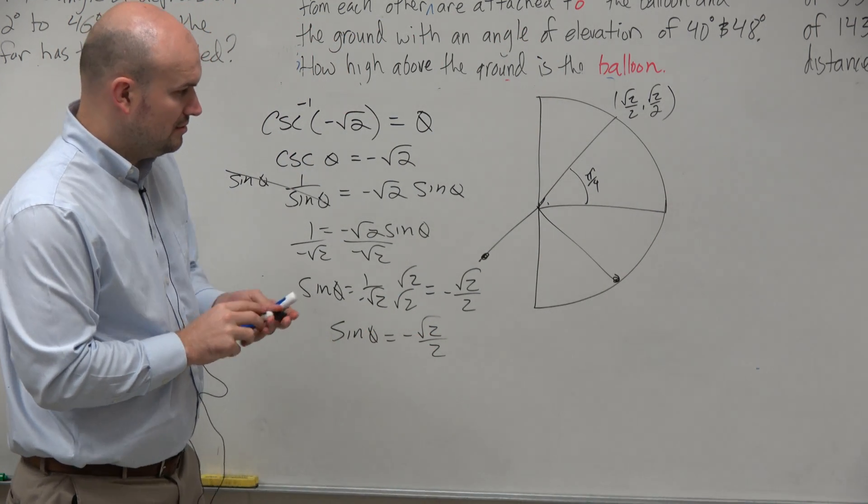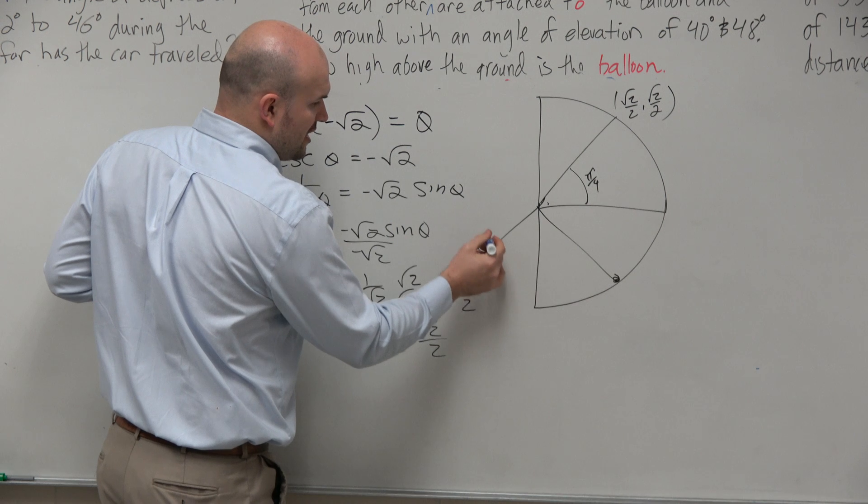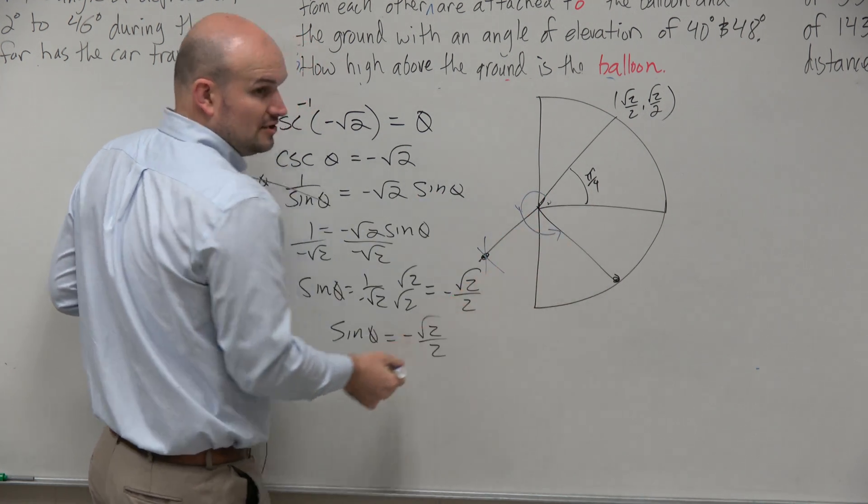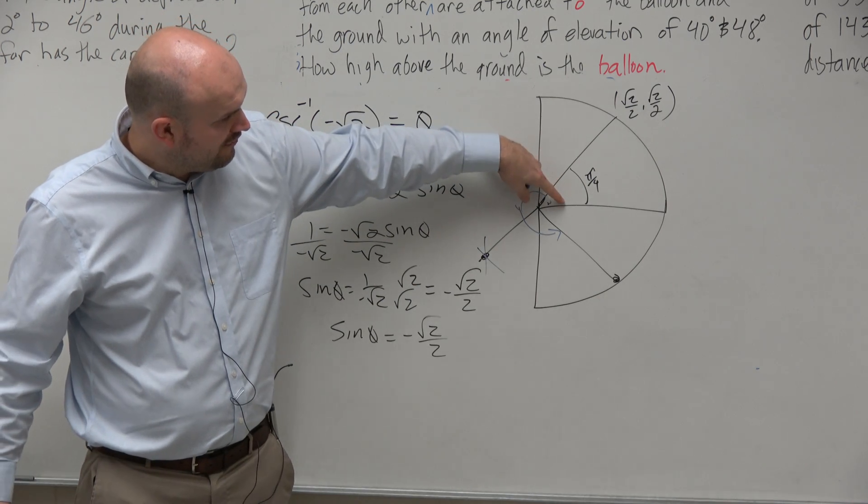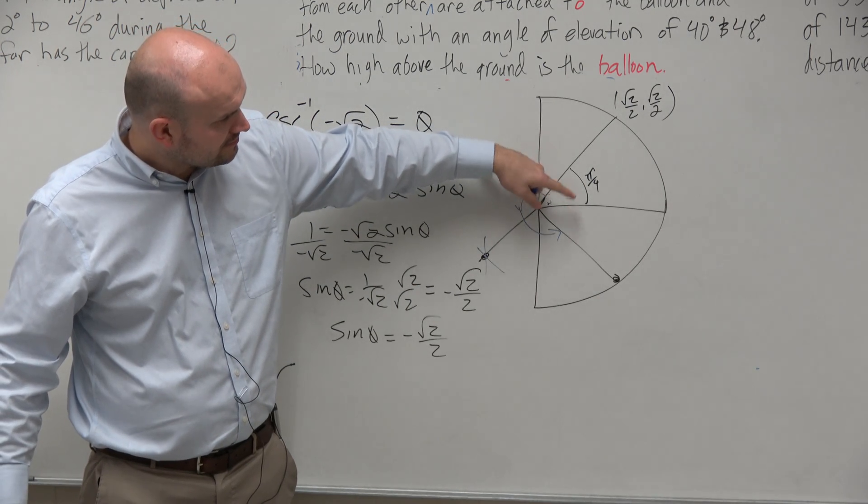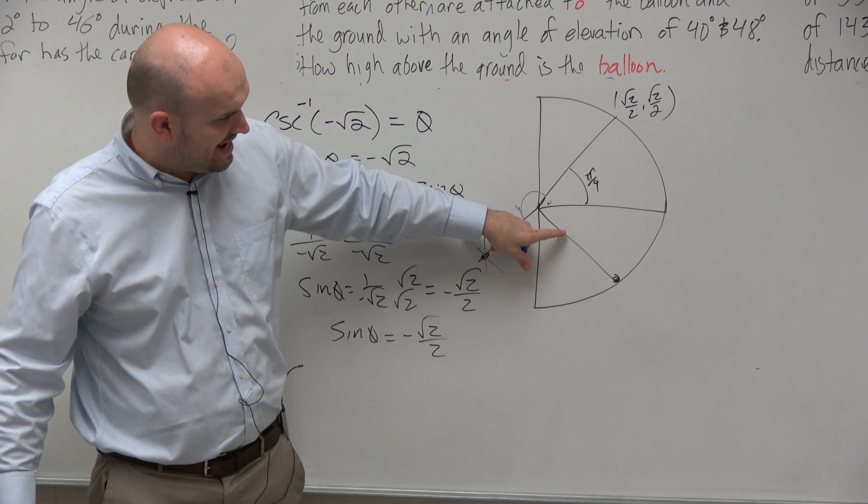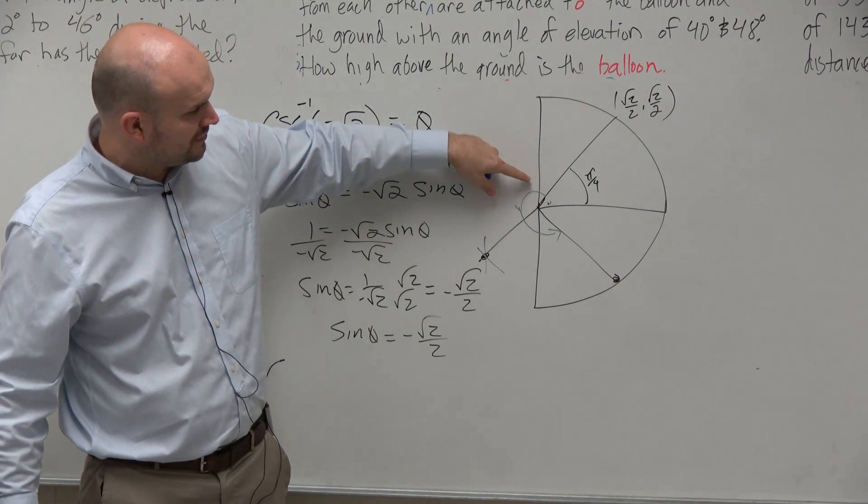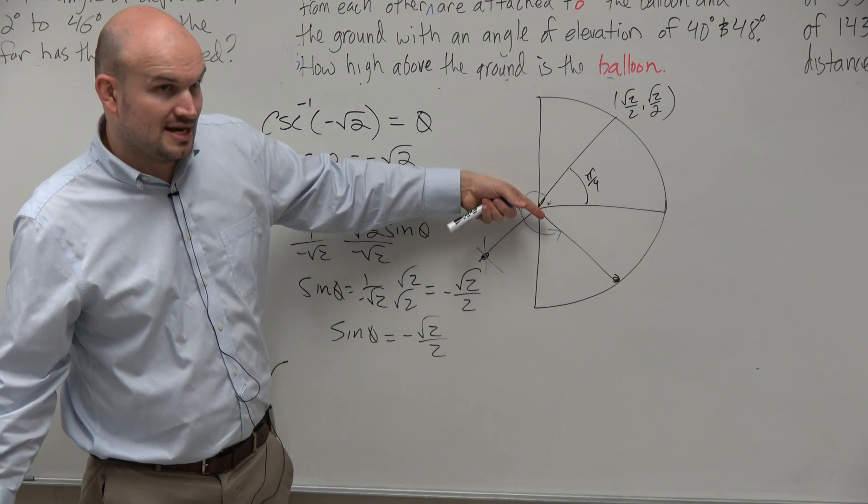So therefore, we can mark this point off. Whatever that angle is, that's not going to work. This angle also doesn't work because to go from positive x-axis to that angle is going to have to travel through the second and third quadrants. So that's not going to fall within our domain.